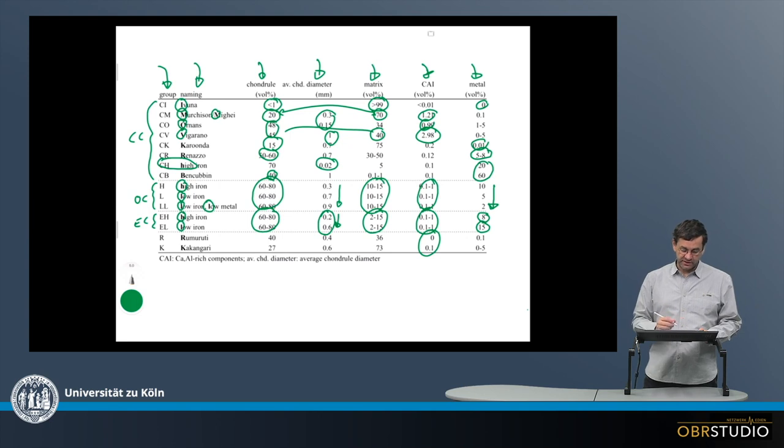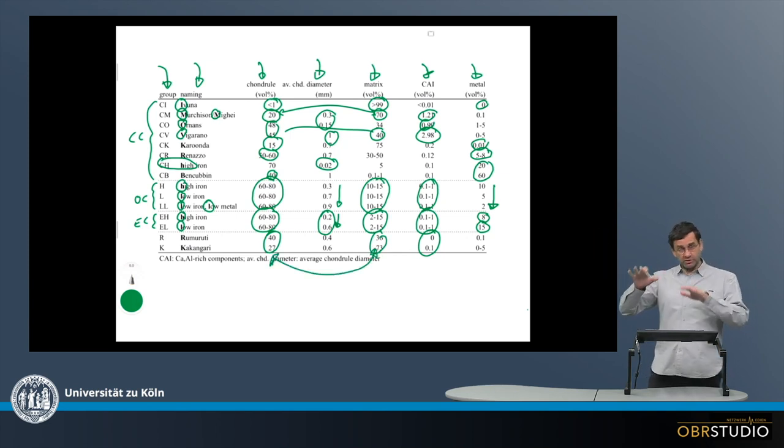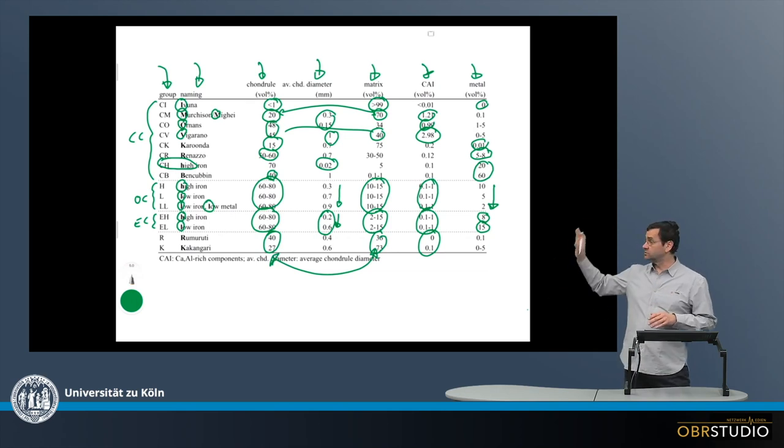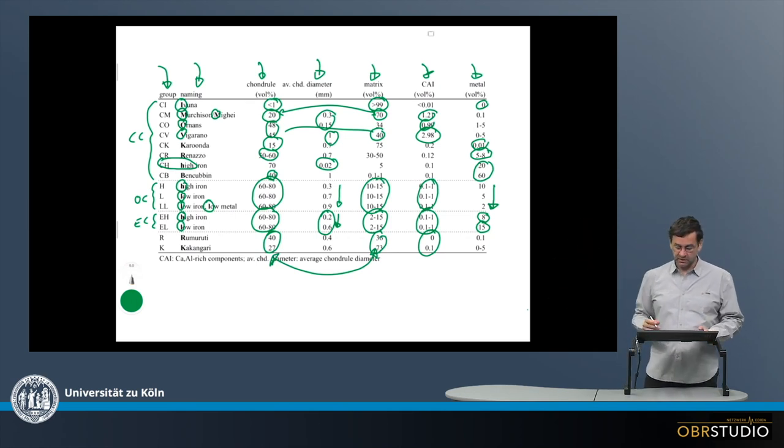And finally, rumrutiite and kakangariite. They have matrix and chondrule abundances that are about similar, from the proportions, to the carbonaceous chondrites. With respect to CAIs and metal, they are about similar more to ordinary enstatite chondrites, so this is how they are different.